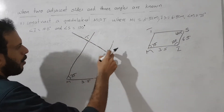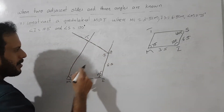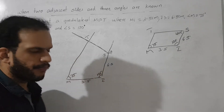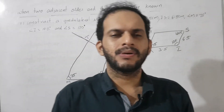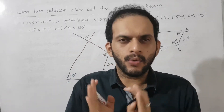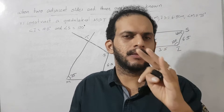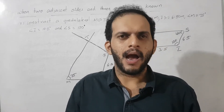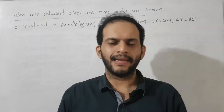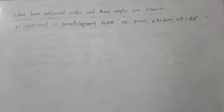So this is our quadrilateral MIST — M-I-S-T — with angles 75°, 120°, 105°, and sides 3.5 and 6.5. This is the idea to construct a quadrilateral when we know two adjacent sides and three angle values. The second question is: let's construct a parallelogram HEAR where HE is equal to 5 cm, EA is equal to 6 cm, and angle R is equal to 85°.